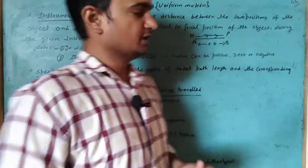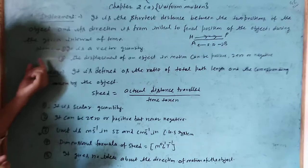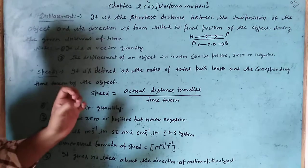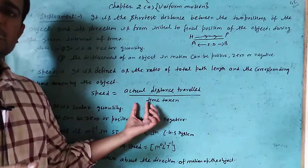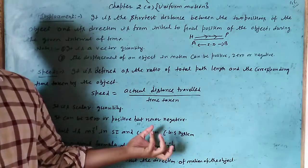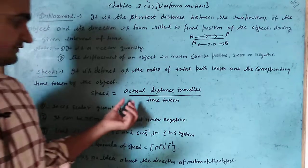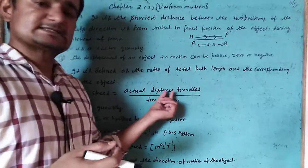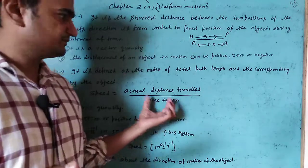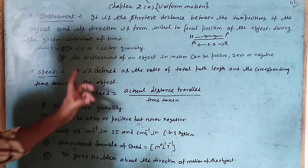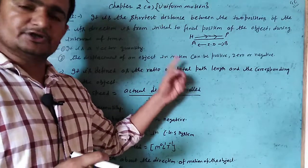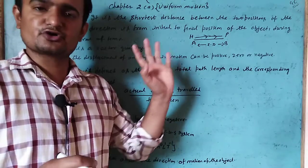The next topic is speed. What do you mean by speed? Speed is basically the actual path travelled by the object in a given time taken. Speed is defined as the ratio of the actual distance travelled to the time taken.